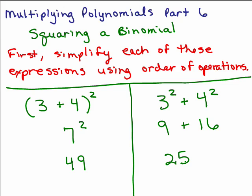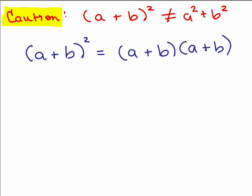The first thing I want you to notice is that these two expressions are not the same: 3 plus 4 squared is not the same as 3 squared plus 4 squared. So caution — in general, if you have something in parentheses like a plus b squared, it is not a squared plus b squared, unless one of those letters is 0.